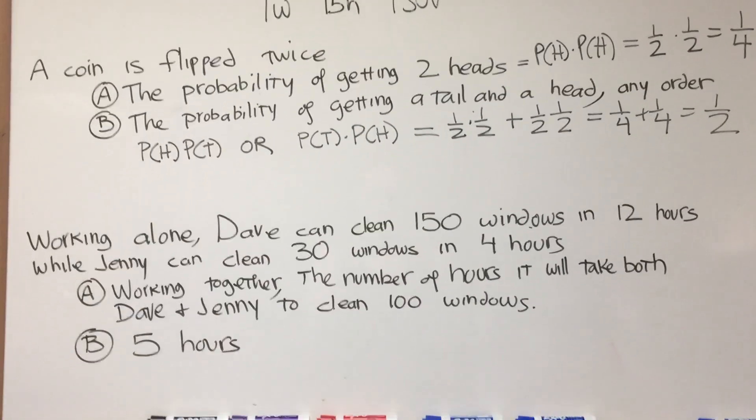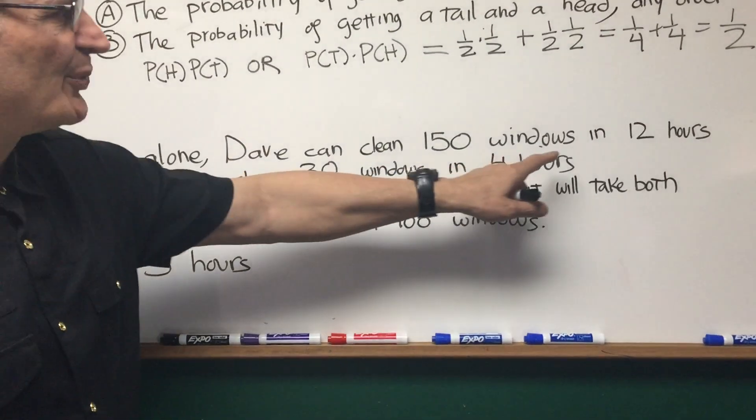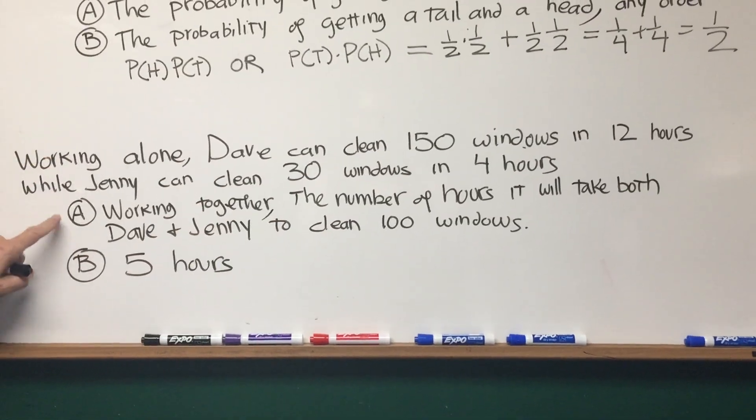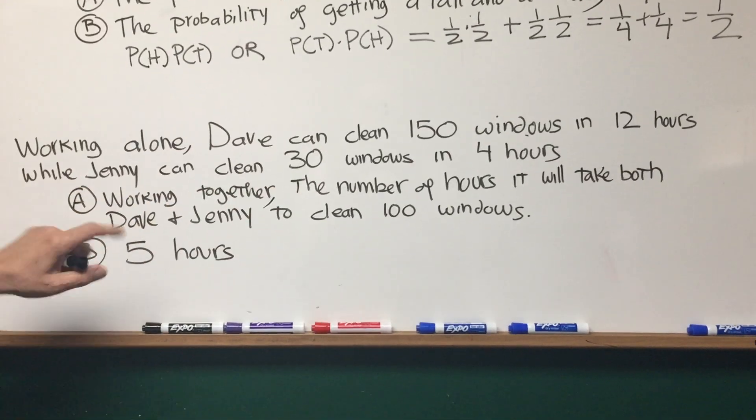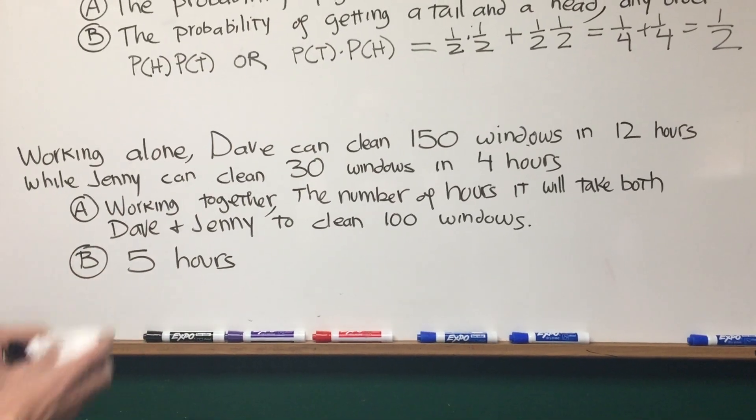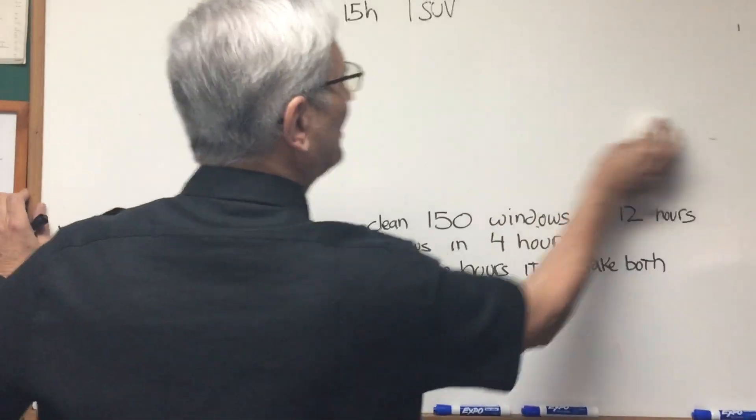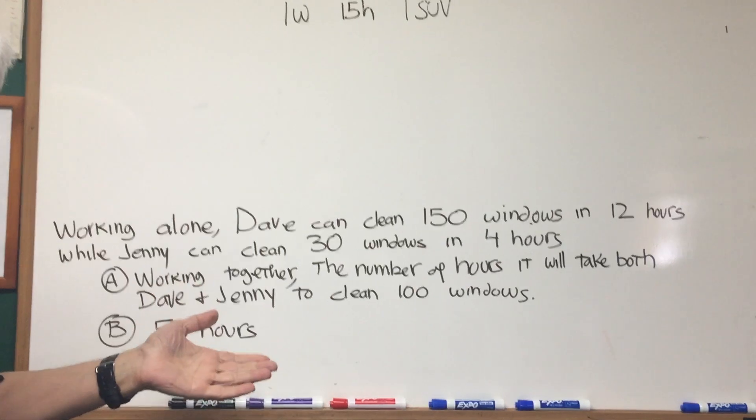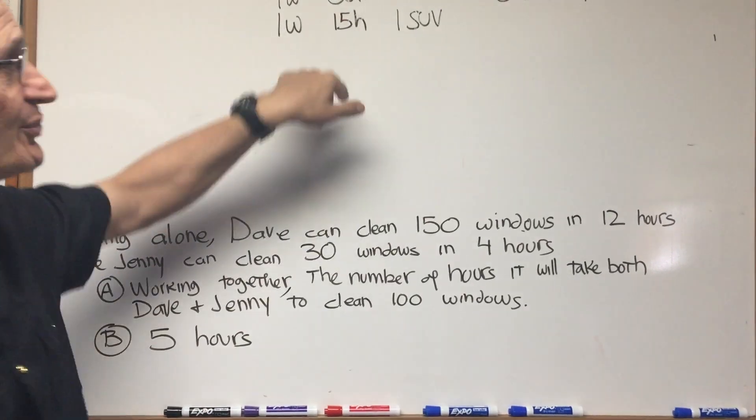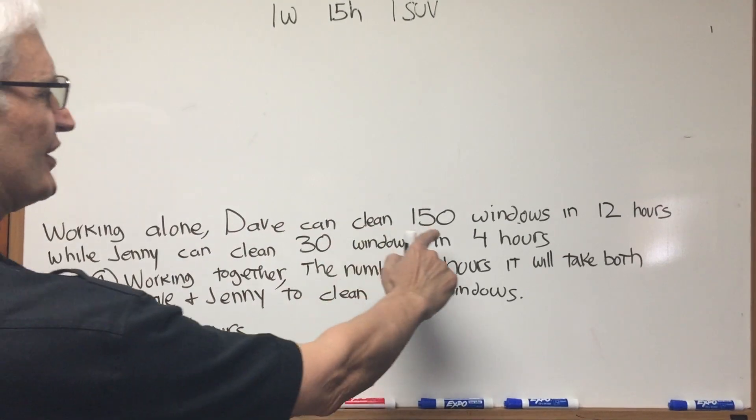All right, now let's go to this third problem. Let's read it together. Working alone, Dave can clean 150 windows in 12 hours, while Jenny can clean 30 windows in four hours. Quantity A, working together, the number of hours it will take both Dave and Jenny to clean 100 windows, and quantity B, five hours. All right, well, this is a slightly more elaborate version of a combined work problem, and here's how to do it. Remember how to do the combined work problem? You have one over Dave's rate of work, plus one over Jenny's rate of work, equals one over the total time of work. This is only going to be slightly more complicated. Okay, so let's do Dave's rate.